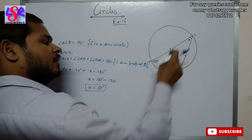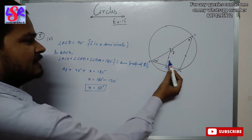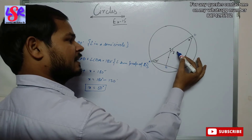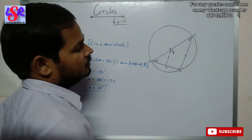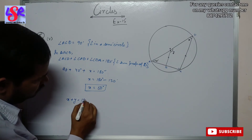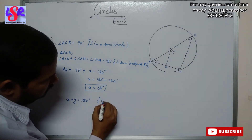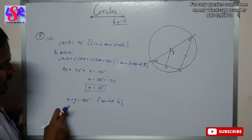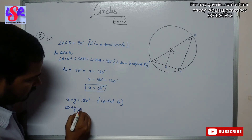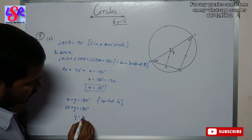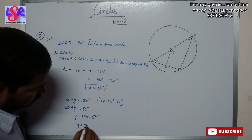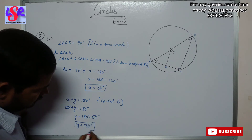To find the value of Y, we know this line is parallel to the other one. Since the lines are parallel, X and Y are co-interior angles. So X plus Y equals 180 degrees. With X equal to 50 degrees, 50 plus Y equals 180, therefore Y equals 130 degrees.